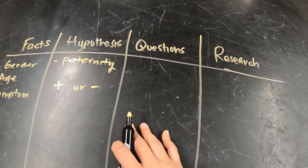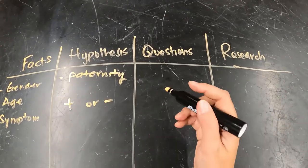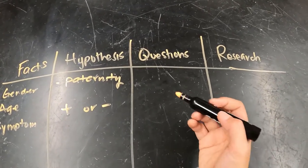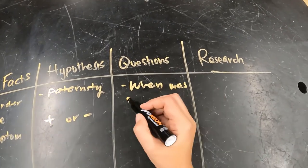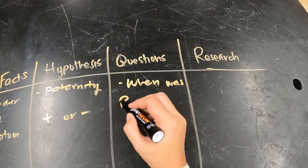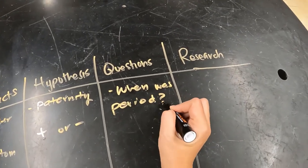In the questions section, when they're doing the case study analysis, they usually put questions that they would want to ask the patient. So they might ask, when was her last period, to kind of get the timing down and figure out maybe that might be a way to determine who the father is in that case.